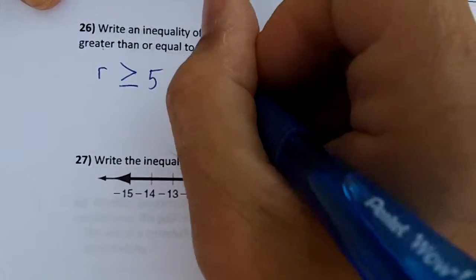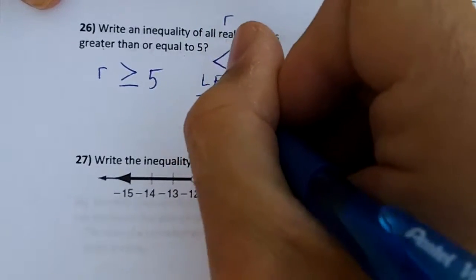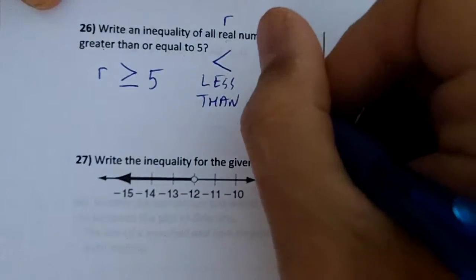Remember, the arrow points left is less than, the arrow points right is greater than.